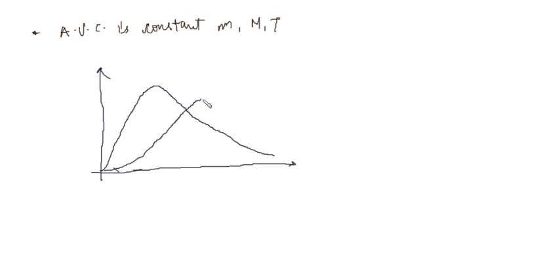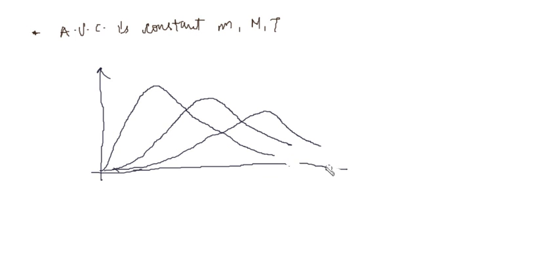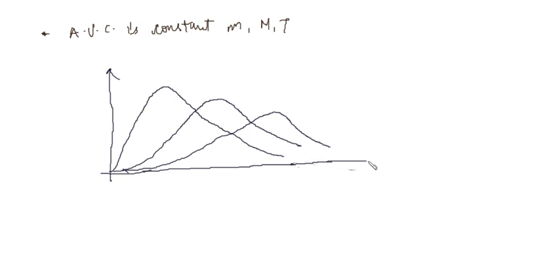Now if we increase the temperature, the curve shifts. If we further increase the temperature, the curve shifts further, but we know that the area under the curve is constant. This area remains constant when molar mass is constant and we are varying the temperature. The curve is dN/dU versus N·dU. Let's say fraction is F1 at the first temperature, F2 at the second, and F3 at the third.